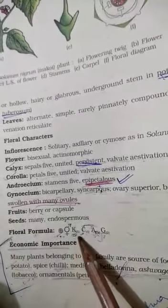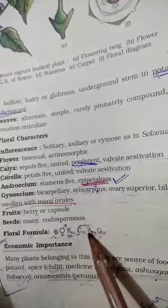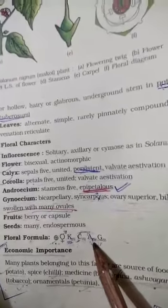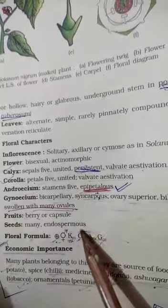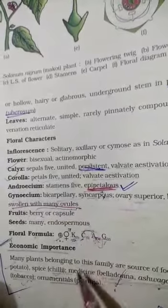Calyx 5 united means bracket. Corolla 5 united means bracket. Androecium are 5 and they are epipetalous. Epipetalous means they are joined with petals, so this upper bracket is united with the petals.